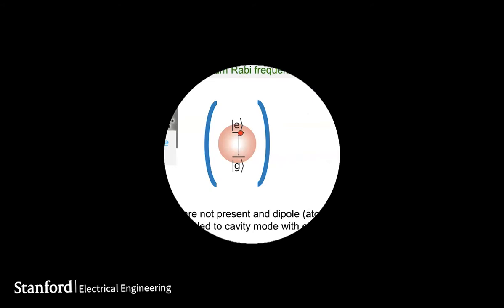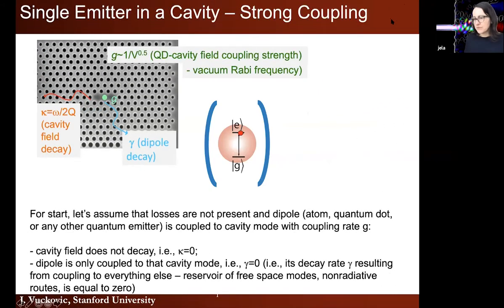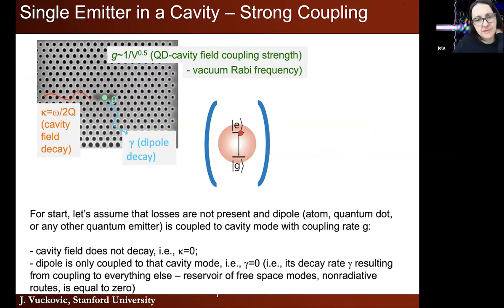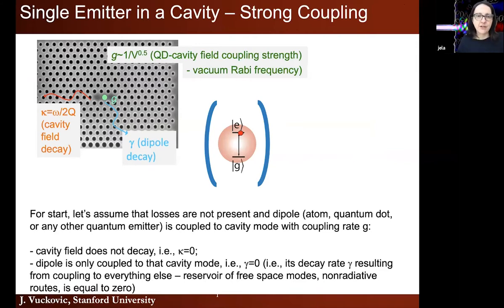Good afternoon, everyone. I'll briefly remind you of what we've been up to lately. Since we had a few days since the last lecture, I'll make a very brief recap of the last week. We're talking about light-matter interaction and cavity quantum electrodynamics. Last week, we basically introduced the Jaynes-Cummings Hamiltonian, which describes the interaction between a single emitter and the field.